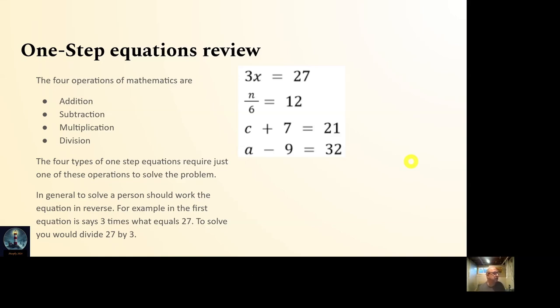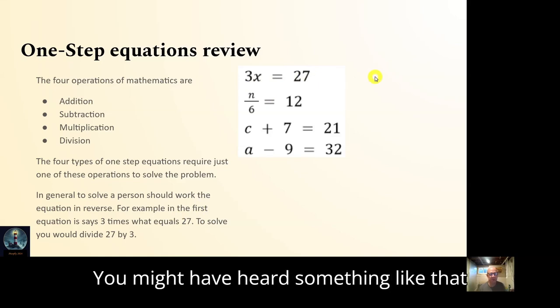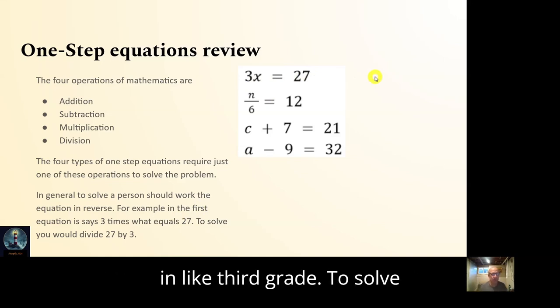One-step equations. The four operations of math: adding, subtracting, multiplying, and dividing. So each of these equations is multiply here, divide here, add here, subtract here. So to solve, you just do the opposite. So this equation here is 3 times what equals 27, right? You might have heard something like that in third grade.